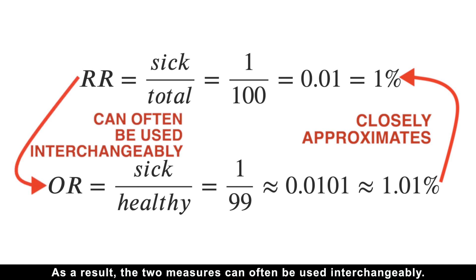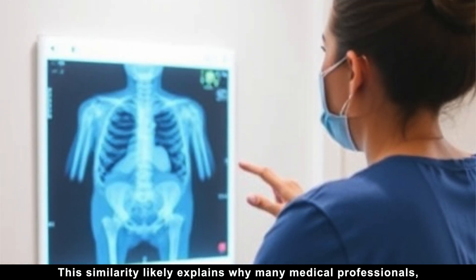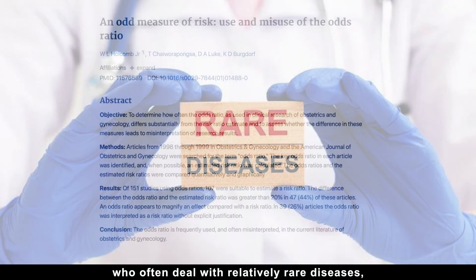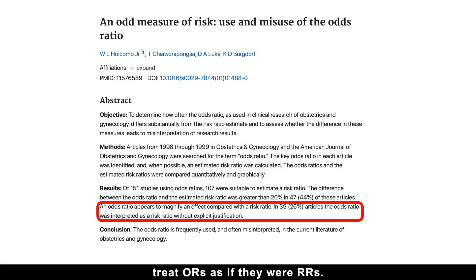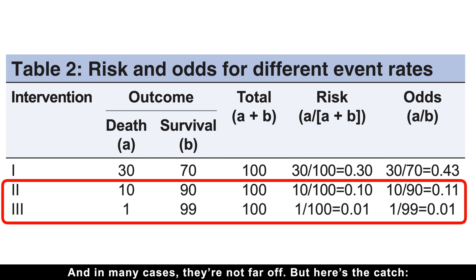As a result, the two measures can often be used interchangeably. This similarity likely explains why many medical professionals, who often deal with relatively rare diseases, treat odds ratios as if they were risk ratios. And in many cases, they are not far off.